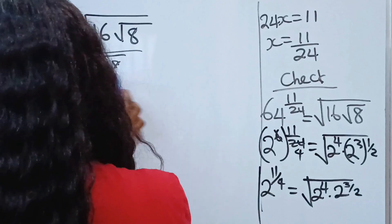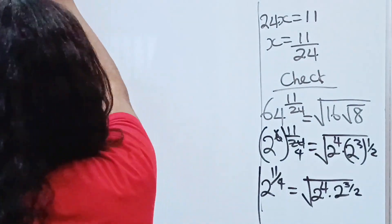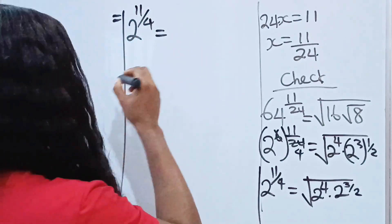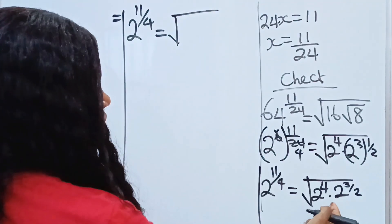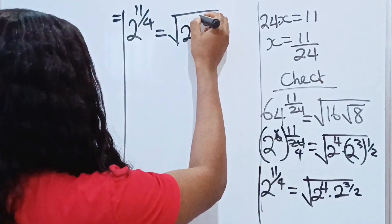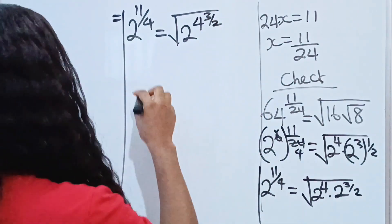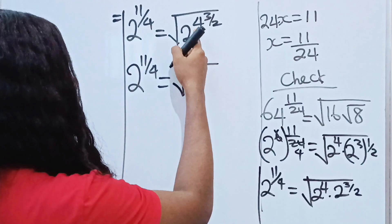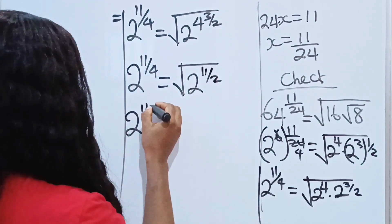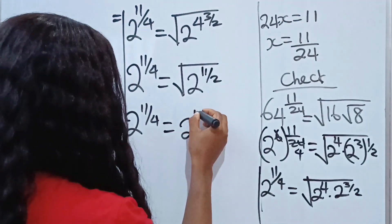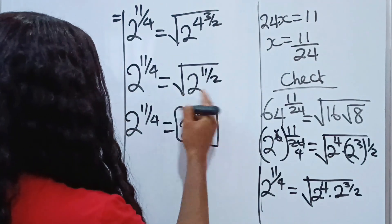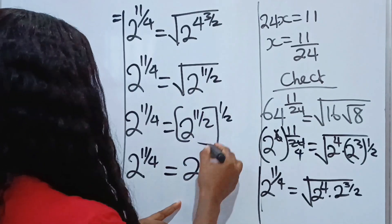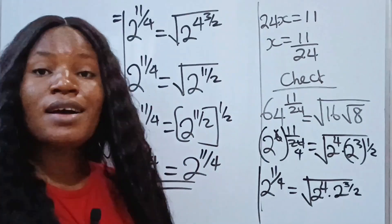On the right side, we have 2 to the power of 11 over 4 is equal to the square root of 2 to the power of 4 multiplied by 2 to the power of 3 over 2. Because we have the same base multiplying, we pick one base and add the powers: 4 and 3 over 2 gives us 4 whole number 3 over 2, which equals 11 over 2. So we have 2 to the power of 11 over 4 equals 2 to the power of 11 over 2 under the square root. Since square root equals 1 over 2, multiplying gives 11 over 4. Both sides equal 2 to the power of 11 over 4, which shows that the answer x = 11/24 is correct.